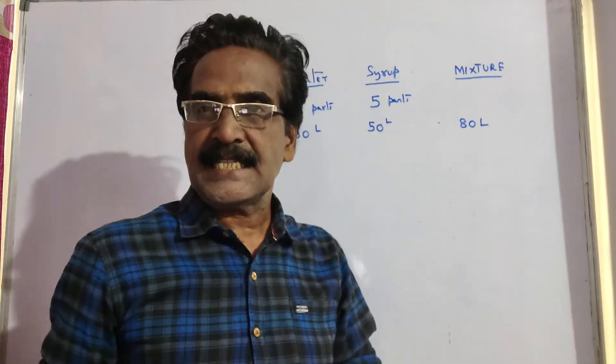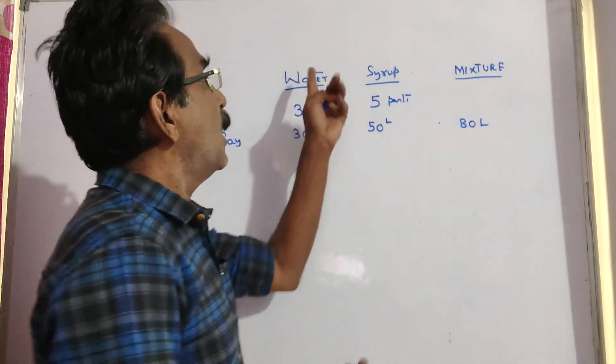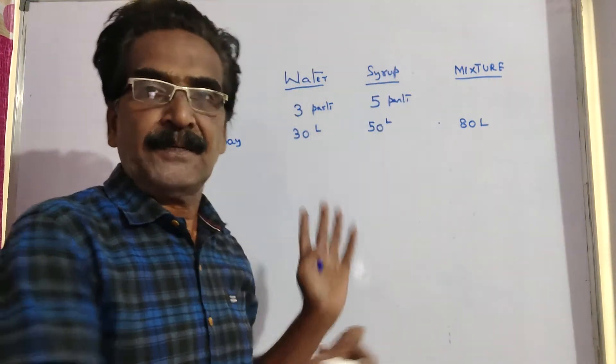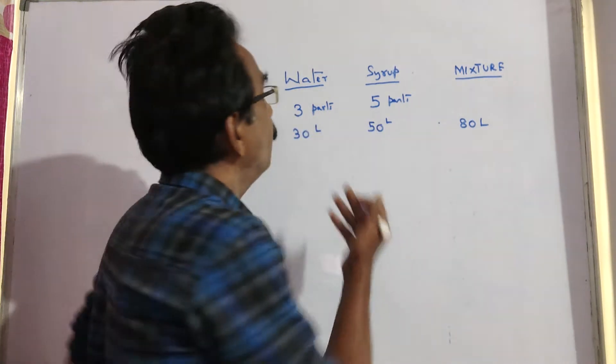Now, x liters of mixture is drawn. If x liters of mixture is drawn, how much water and syrup will be drawn in the ratio 3 is to 5? How much water is drawn?